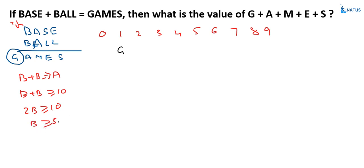If B is greater than or equal to 5, the possible values of B are 5, 6, 7, 8, or 9.